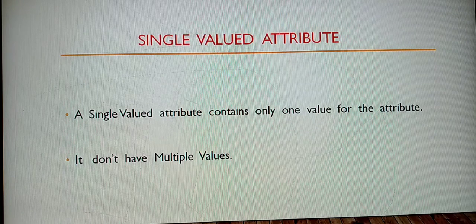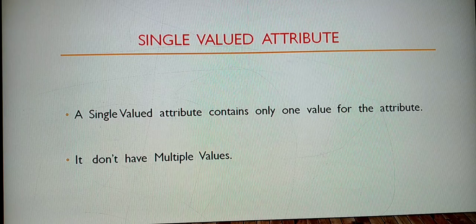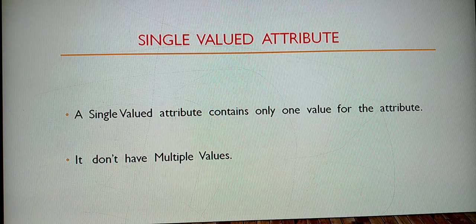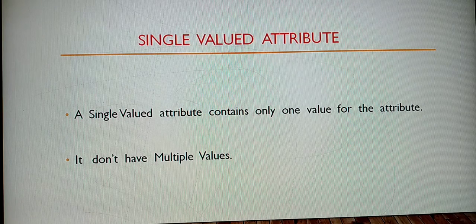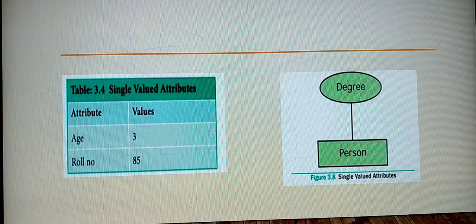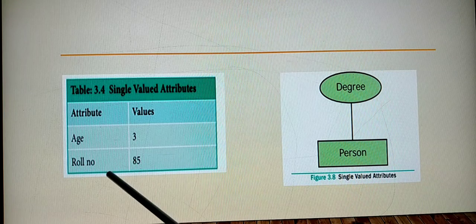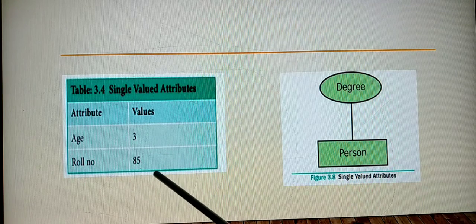A single-valued attribute has only one value and does not have multiple values. For example, a person's age is a single-valued attribute - the age can be 3, or a roll number can be 85. A person can have a single value for such attributes at any time.